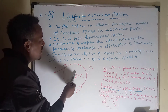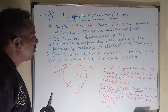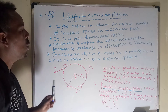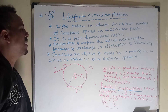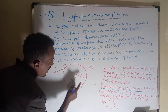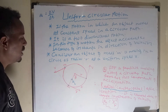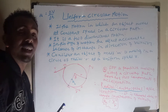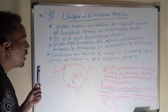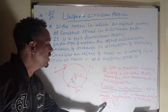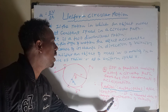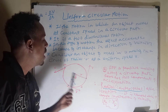The first component is centripetal acceleration, also called radial acceleration. It is always directed towards the center of the circle. Mathematically, centripetal acceleration AC is expressed as v² / r — that is, speed squared over radius.